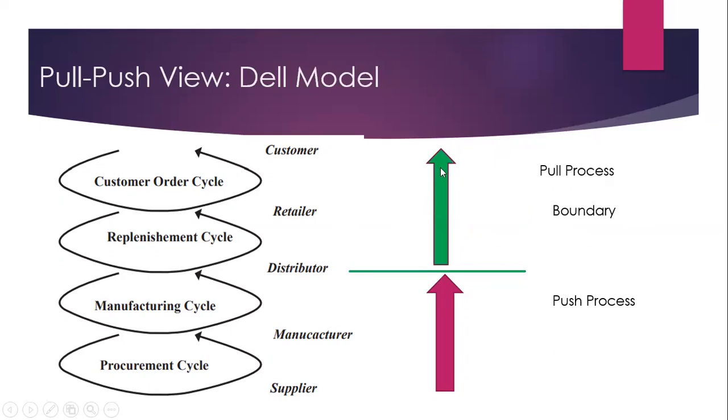the Pull Process extended to the Manufacturer, because there was no intermediary between Manufacturer and Customer. Customer directly placed orders to the Manufacturer via Dell's website. This was the initial model. Dell nowadays does use the services of Retailers and Distributors. In the previous Dell Model, the boundary between Pull and Push Process was after the Manufacturer.